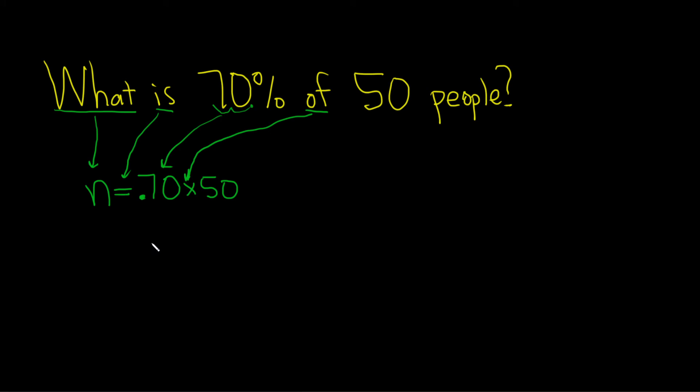I'm going to put this in my calculator: .70 times 50. I got n equals 35, and that should be the final answer. I hope this video has been helpful.